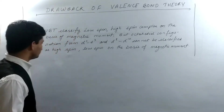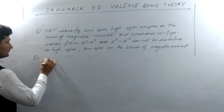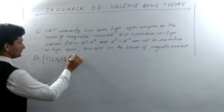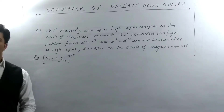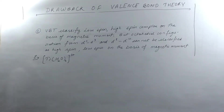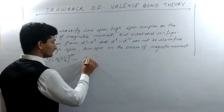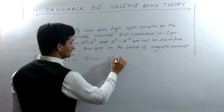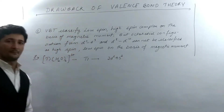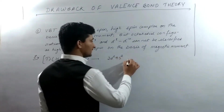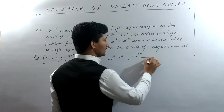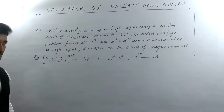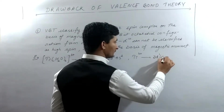Let's start with [Ti(H₂O)₆]³⁺. In this complex, titanium has the outermost configuration 3d²4s². But in case of Ti³⁺ it becomes 3d¹4s⁰. So the configuration is 3d¹.